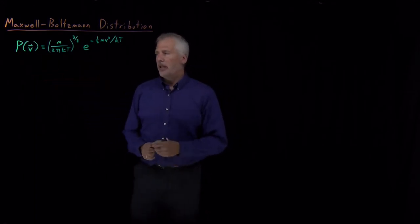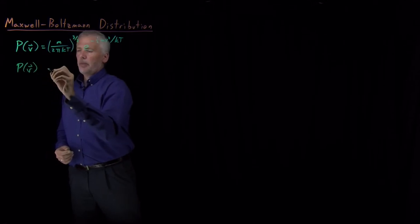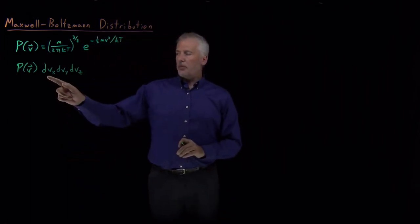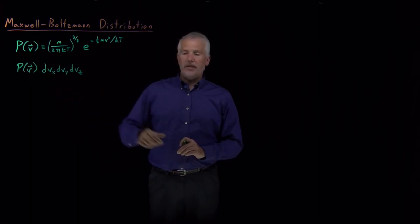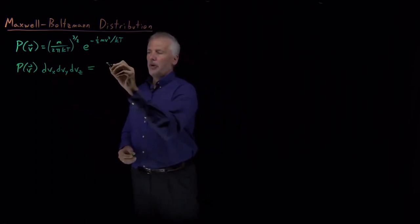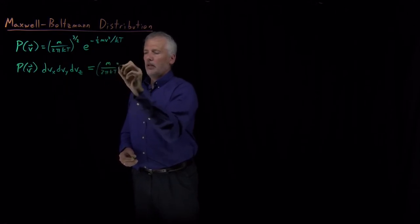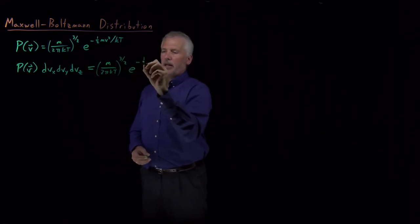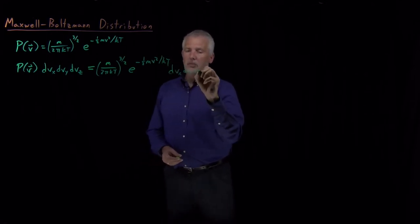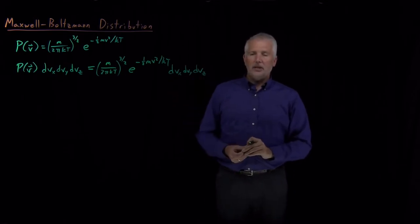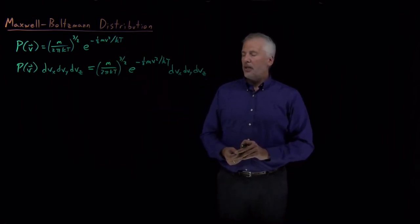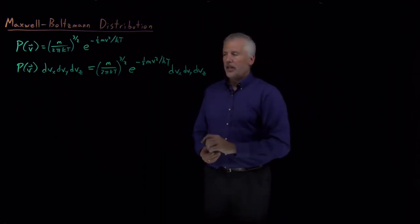We can start with this expression and remind ourselves that this probability, if integrated, would have three different velocity dimensions as integration variables: vx, vy, and vz. Tacking on dvx, dvy, dvz onto both sides of that expression is useful because it lets us note that these are Cartesian variables, and the speed — the magnitude of the velocity — is like the magnitude in spherical polar coordinates. So we convert Cartesian coordinates into polar coordinates.